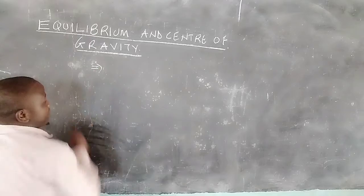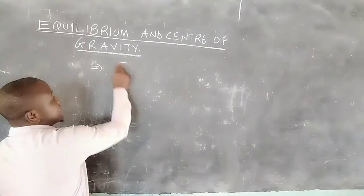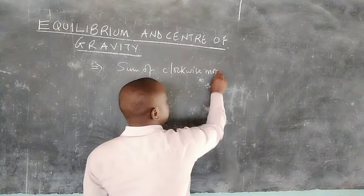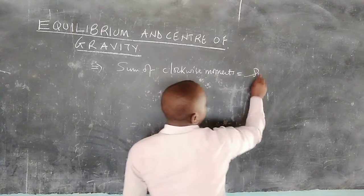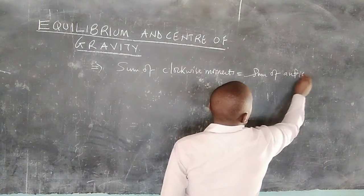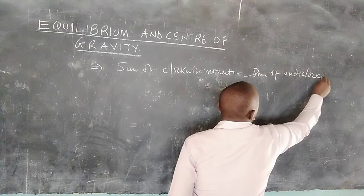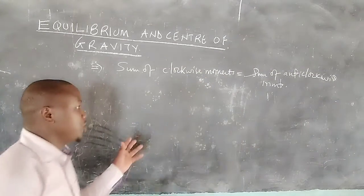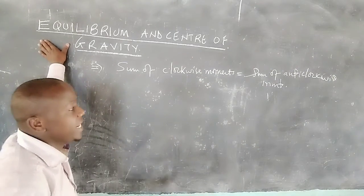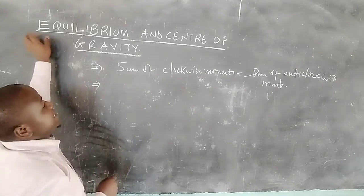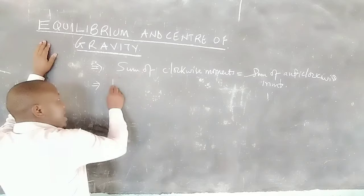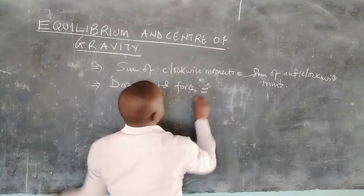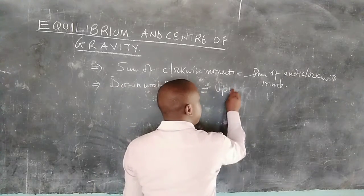For a system in equilibrium, we apply the law of moments, also called the principle of moments: the sum of clockwise moments should equal the sum of anti-clockwise moments at the same point. Additionally, for a system in equilibrium, downward forces should equal upward forces.